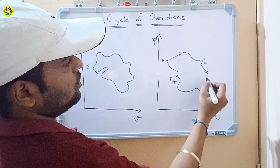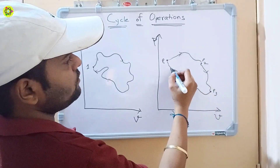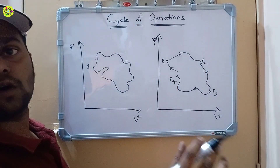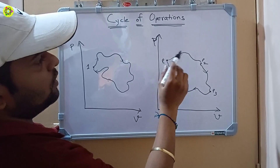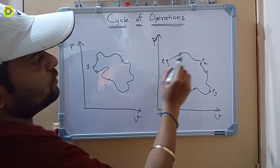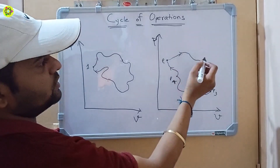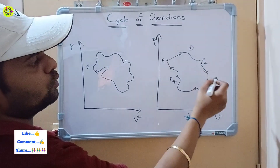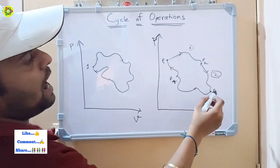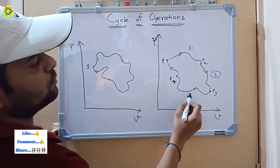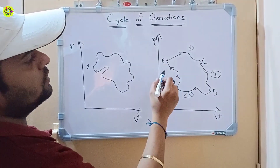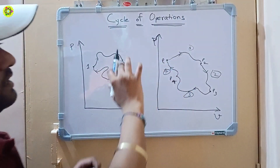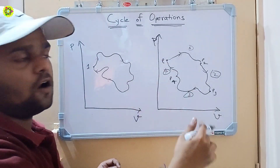This is also a cycle of operations. This cycle consists of multiple processes: the first process is from point P1 to P2, the second process is from P2 to P3, the third process is from P3 to P4, and the fourth process is from P4 back to P1.